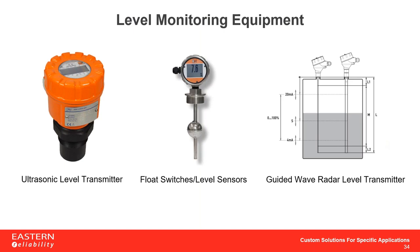For level monitoring that ties into an electrical system or SCADA system, Eastern Reliability can offer the ultrasonic level transmitter. These are typically used for more hazardous or aggressive chemicals where you don't want any equipment touching the chemical itself. If you have a less aggressive chemical compatible with stainless steel, you can use a float switch — a ball that rides up and down a rod going into the tank. All of these pieces of equipment can provide a 4-20 milliamp signal so you can tie them into your system.